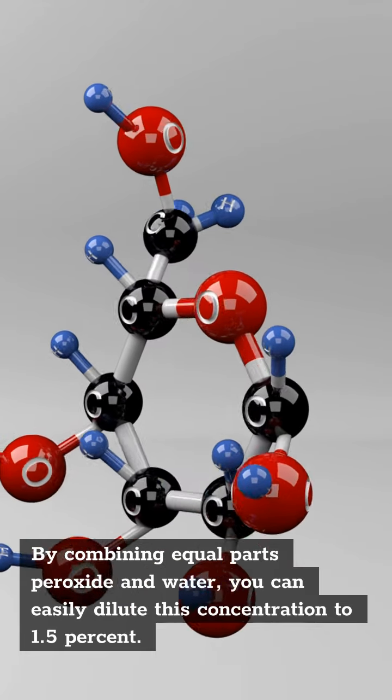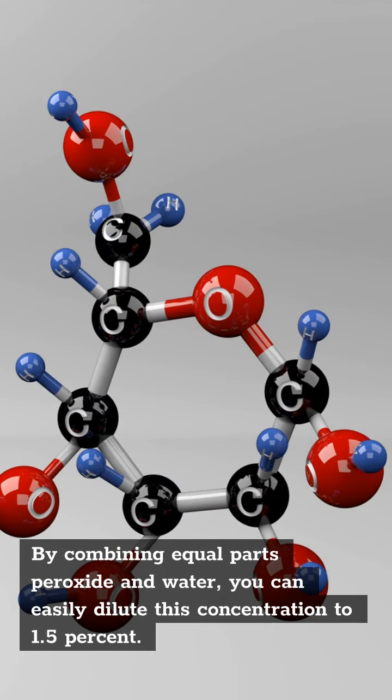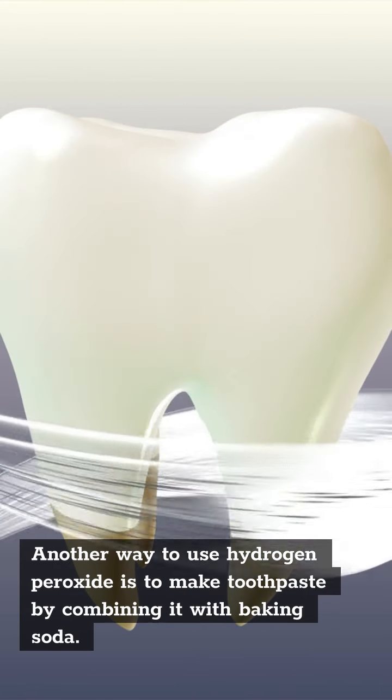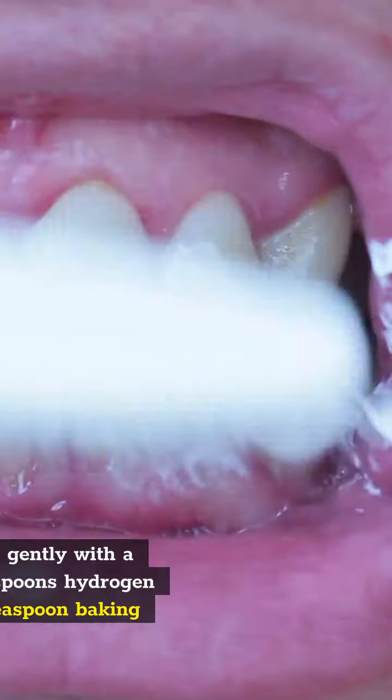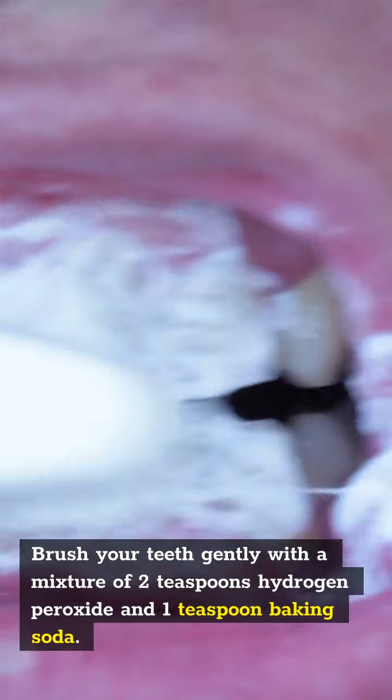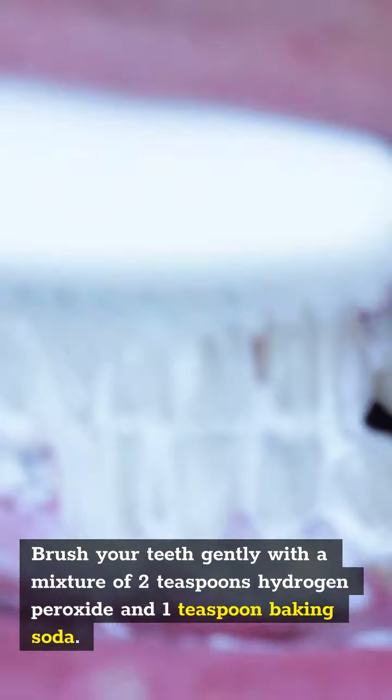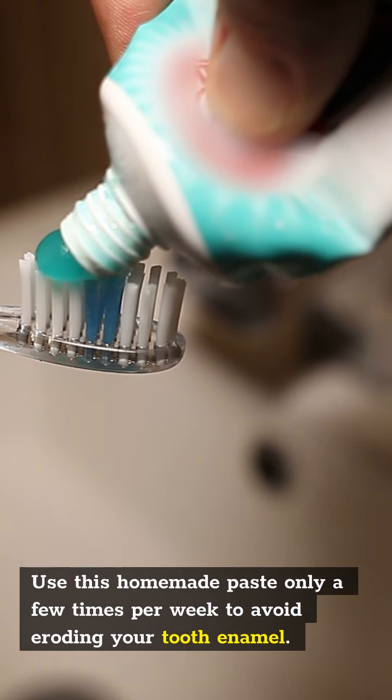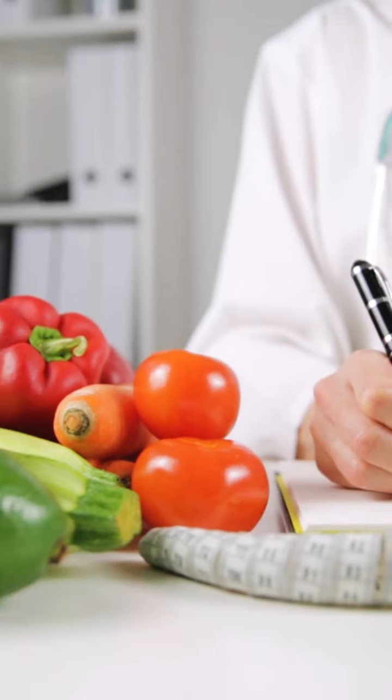Another way to use hydrogen peroxide is to make toothpaste by combining it with baking soda. Brush your teeth gently with a mixture of 2 teaspoons hydrogen peroxide and 1 teaspoon baking soda. Use this homemade paste only a few times per week to avoid eroding your tooth enamel.